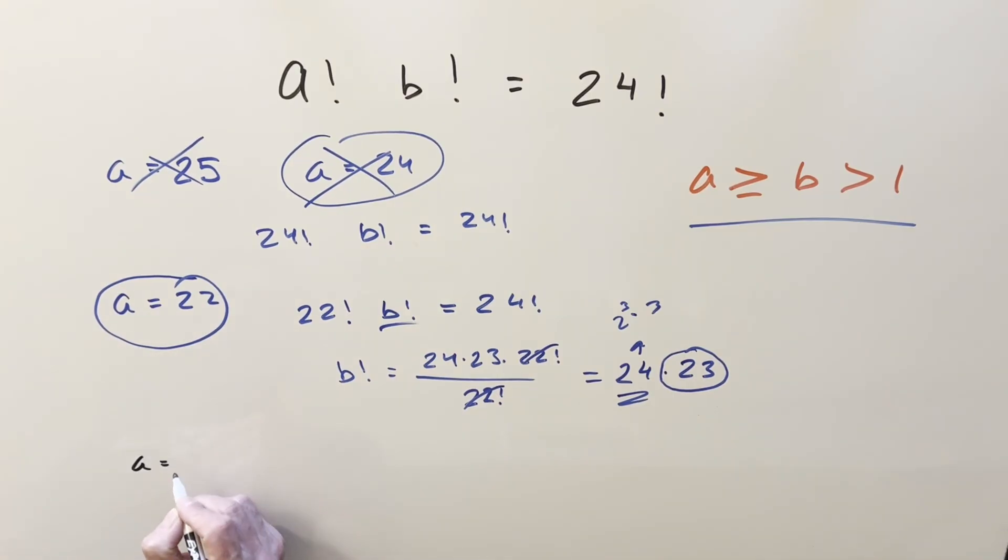So what we're saying is we'd have an equation 23 factorial times b factorial equals 24 factorial. Doing the same kind of thing as this, solving for b factorial. We can expand this out like 24 times 23 factorial over this, cancel here, and what we're left with is b factorial equals 24. But 24, that's just the same thing as 4 factorial. So we have our solution right here of b equals 4.